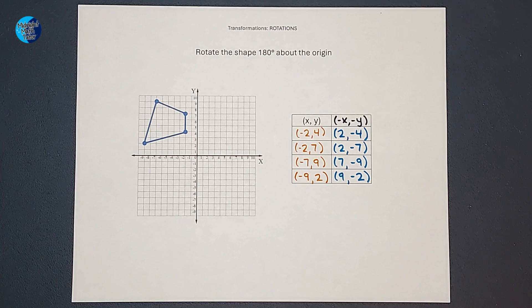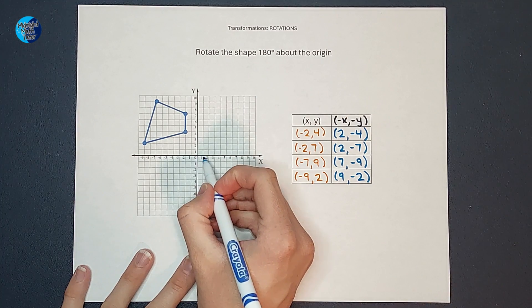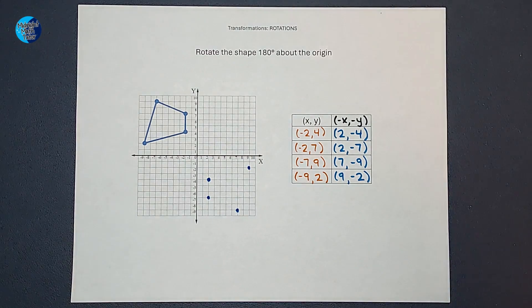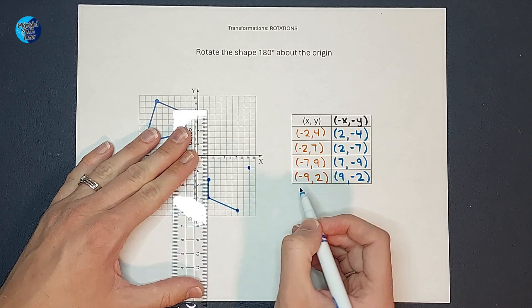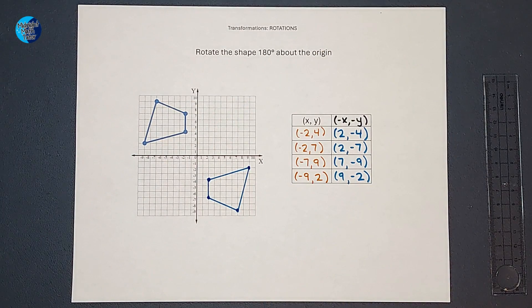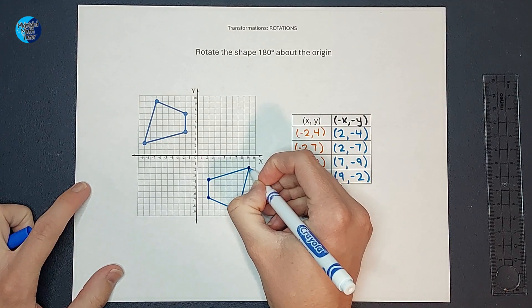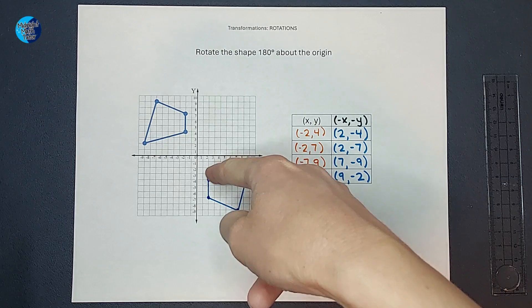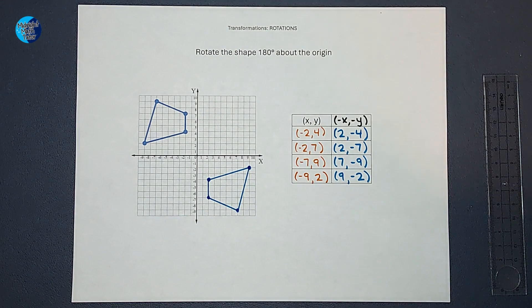Now watch what happens when I graph this. Okay, there we go. Doesn't look pretty good. So does that look like we took that shape and rotated it 180 degrees? I think so.